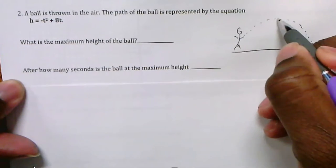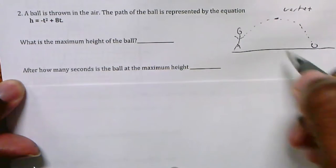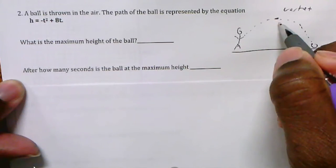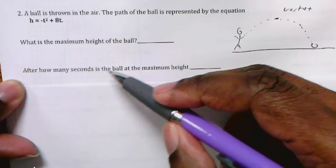To find the maximum height of the ball, we're looking for the vertex. That will give you the maximum height of the ball. The second part says after how many seconds will it take that it reaches maximum height.